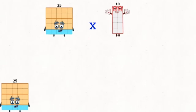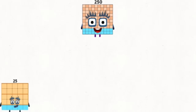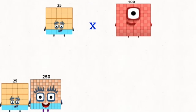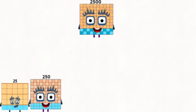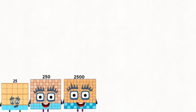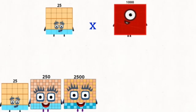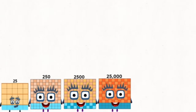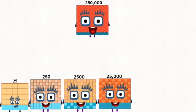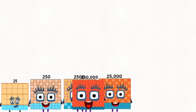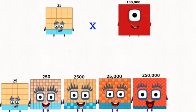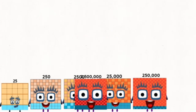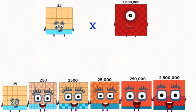25 times 11 equals 250. 25 times 100 equals 2,500. 25 times 1,000 equals 25,000. 25 times 10,000 equals 250,000. 25 times 100,000 equals 2,500,000. 25 times 1,000,000 equals 25,000,000.